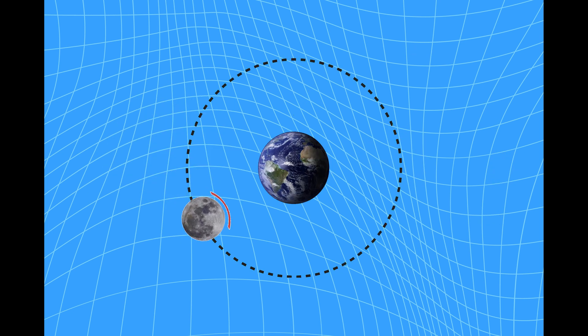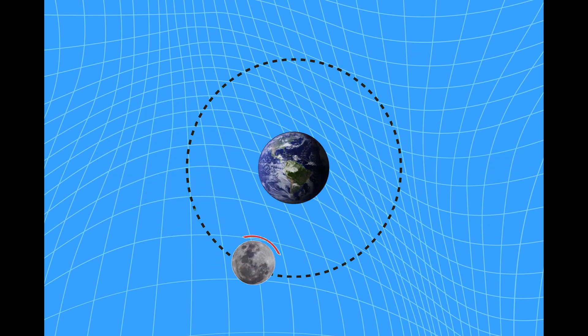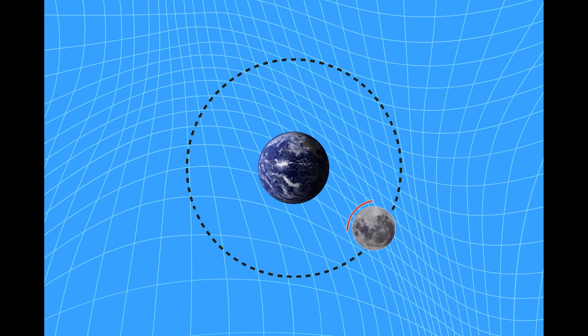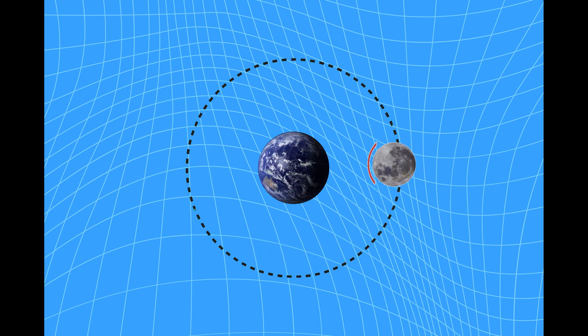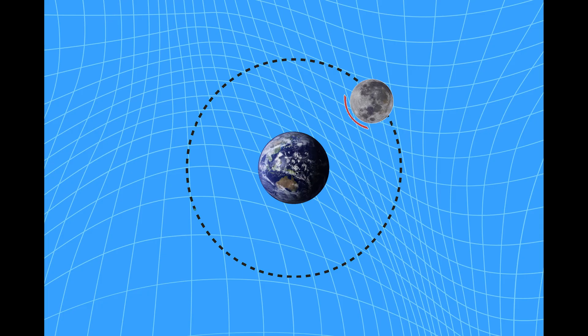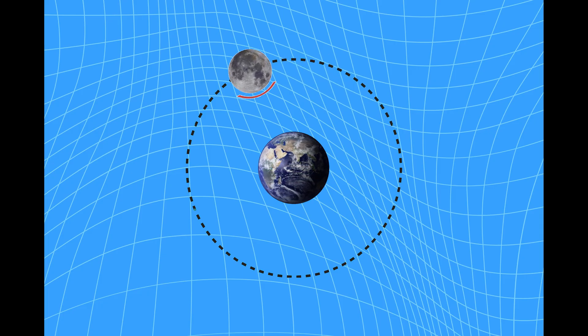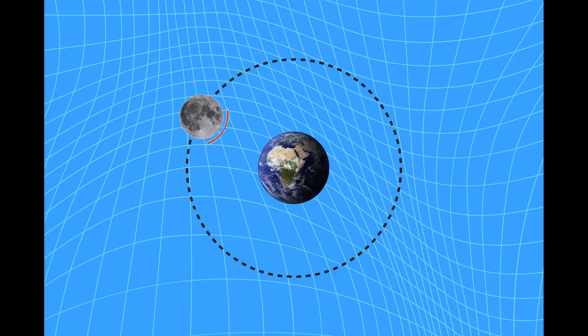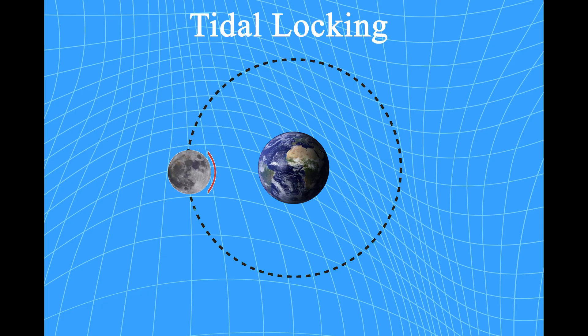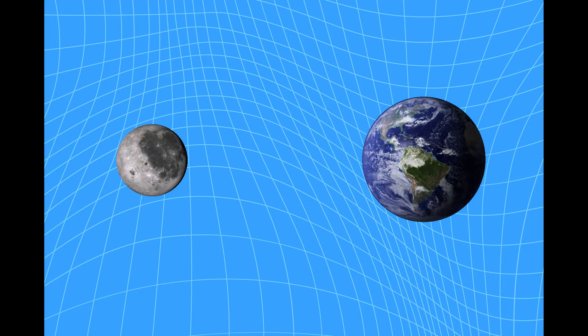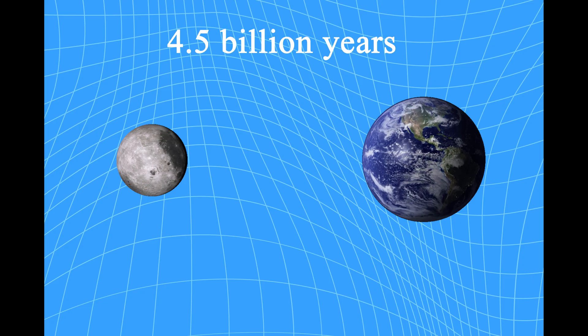Since both the rotation and the revolution of the moon take exactly the same time, the moon revolves around Earth while rotating in such a way that the same side always faces us. This phenomenon is called synchronous rotation, or tidal locking.